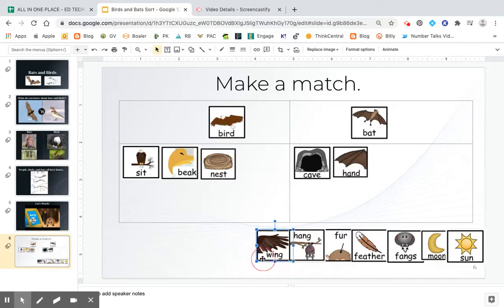All right. Who has a, what's this picture showing us? It's showing us a wing. Who has a wing? Would it be a bird or a bat? Well, we already saw that a bat has a hand, right? So a bird would have the wing. That's right.